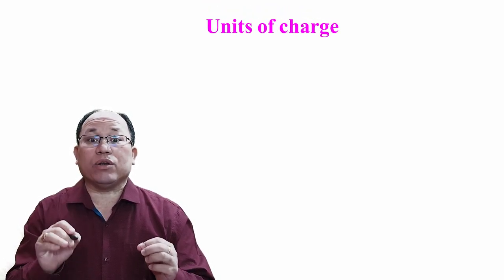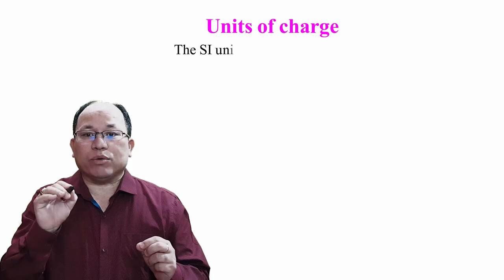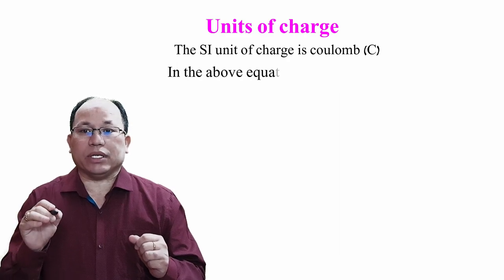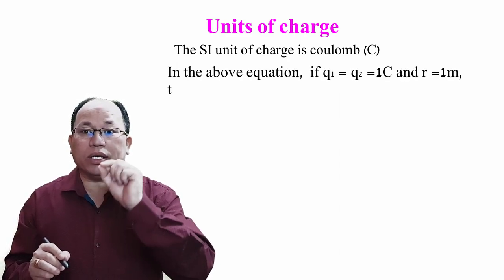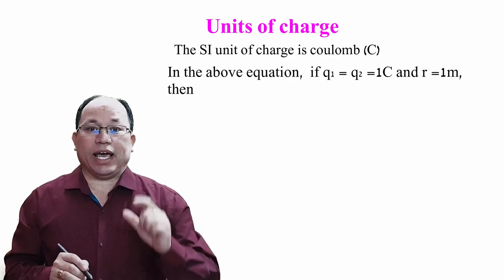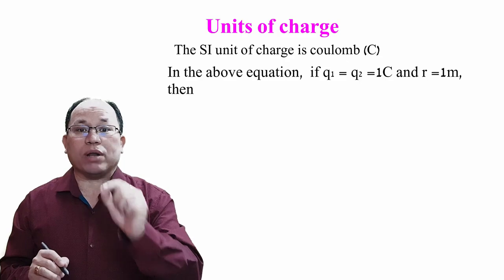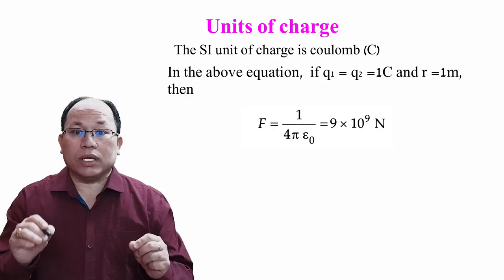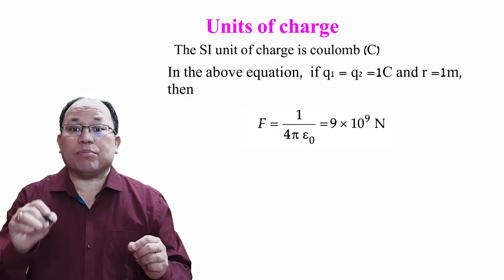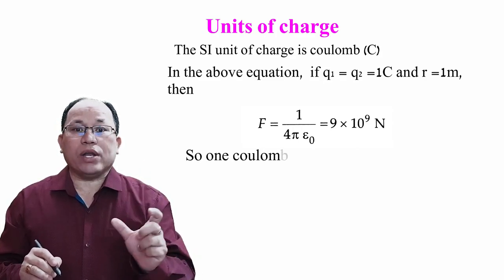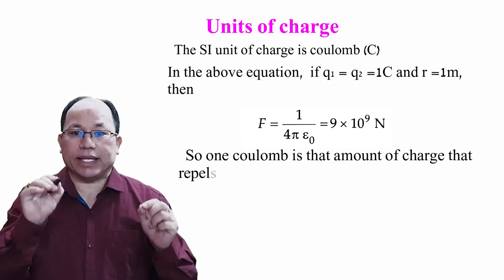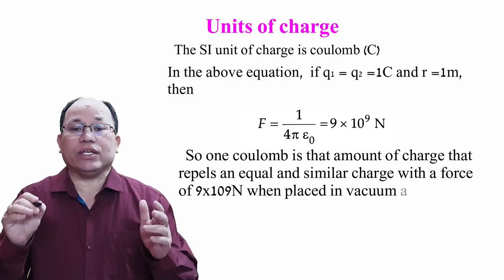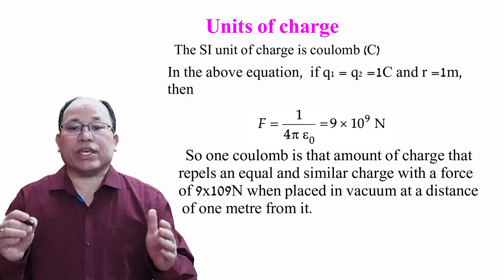Now let us come to the unit of charge. The SI unit of charge is coulomb, represented by C. In the above equation, if you substitute Q1 = Q2 = 1 coulomb and the distance R = 1 meter, then the equation becomes F = 1 / 4πε₀ = 9 × 10⁹ Newton. So 1 coulomb is that amount of charge that repels an equal and similar charge with a force of 9 × 10⁹ Newton when placed in vacuum at a distance of 1 meter from it.